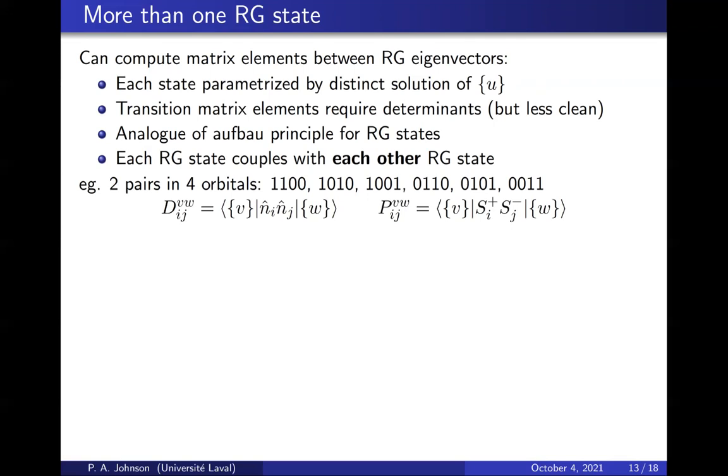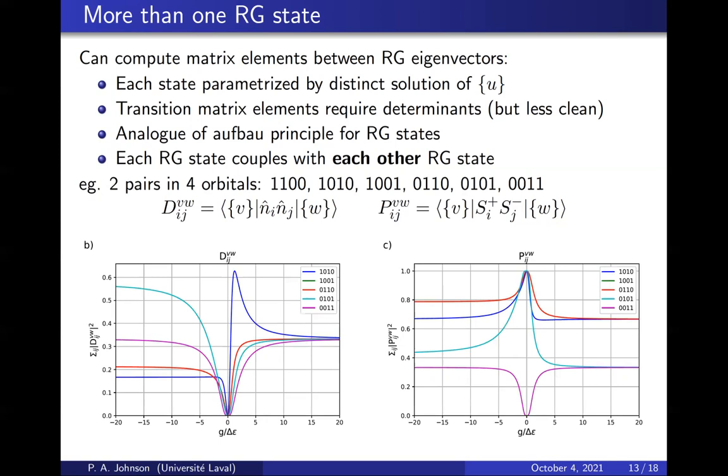We looked at the one-body transition elements and the two pieces of the two-body transition density matrix that you would need, diagonal piece D and the pair-scattering piece P. The couplings show the behavior that we want. Some of them are much more important than others. In particular, the doubles for the pair-scattering are less important than the singles. For the diagonal, they're more important than some of the singles. So that's unfortunate, but it's fine.